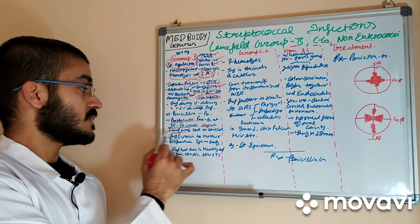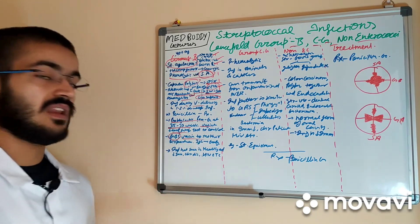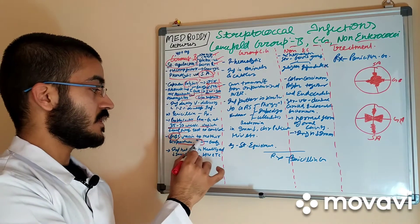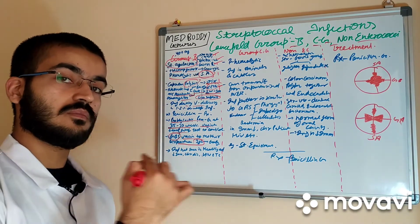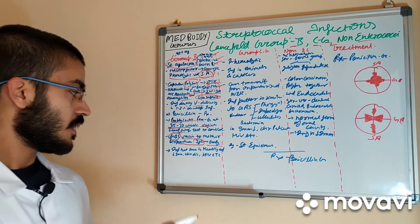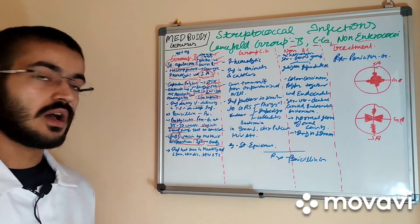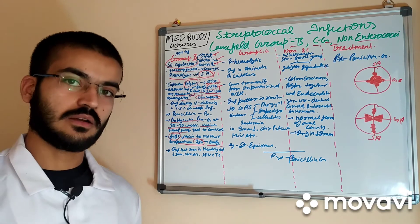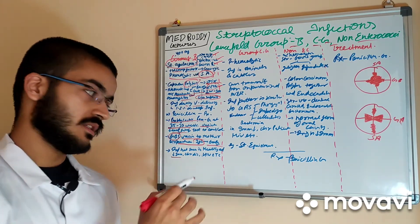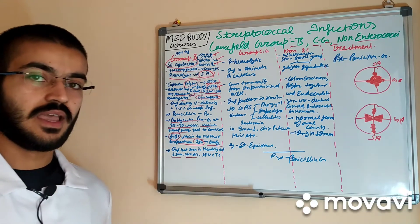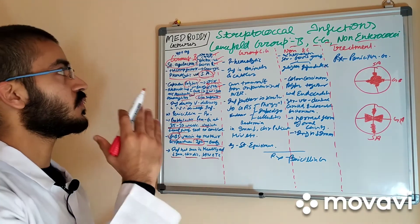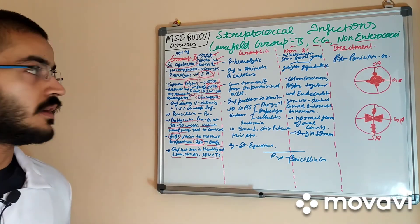Group B Streptococci vaccines are available that can be given to the mother and IgG antibodies that will be formed will be transmitted to the baby and baby will be safe. Infections are not seen in healthy adults generally, but in immunocompromised patients with chronic diseases and HIV patients can have diseases because of group B bacteria.